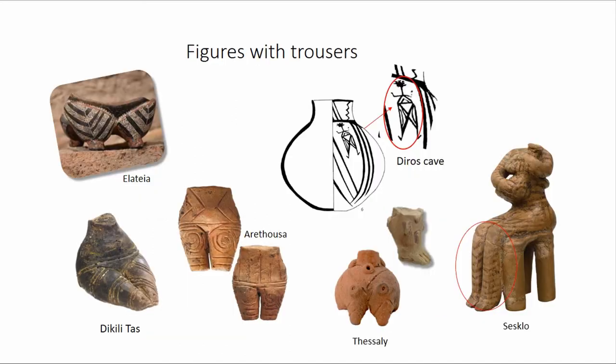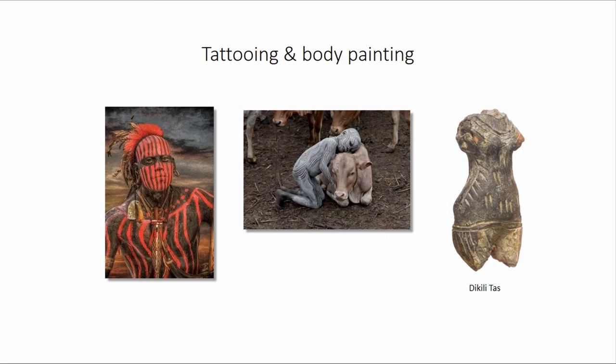The existence of trousers can also be assumed through some figurines with patterns that run around the legs. The main reason for delayed recognition of clothes on figurines was the traditional interpretation of their decorations as tattoos or body painting. This reading is of course possible, but it cannot be applied when clear tailoring elements such as necklines, sleeves, belts, legs and most significantly the seams of clothing are recognised. We can see here a figurine on which even the draping details are given.